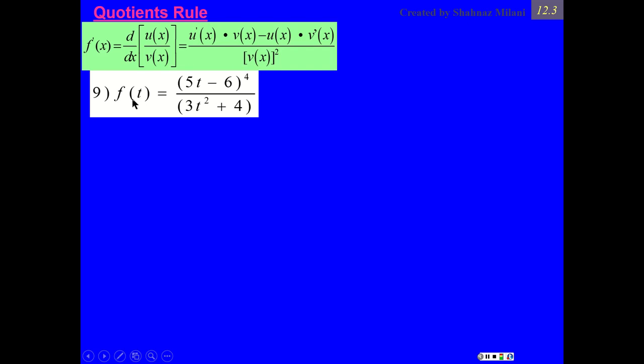By looking at this problem, the first thing will catch your eye is the division. That means you are dealing with the quotient rule. The quotient rule says, derivative of a top times the bottom minus the bottom times derivative of a top over the bottom to the exponent 2.